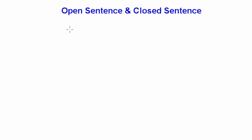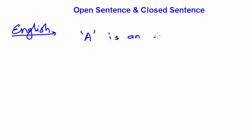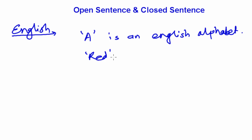Hello, dear sisters and brothers. Today we're going to talk about open sentences and closed sentences in algebra. This is another level after variables and algebraic expressions. To understand open sentences, just like in English — a sentence like 'A is an English alphabet' or 'Red is a color' — these are English sentences.